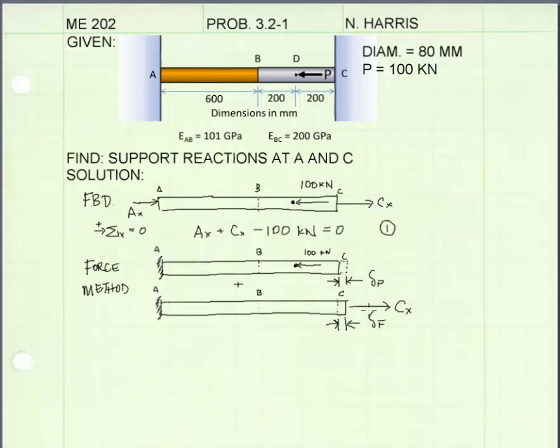In the structure below, the wall is represented as the force Cx. The wall does not permit the structure to shrink, and it's going to pull it back a distance of delta F, we'll call it.